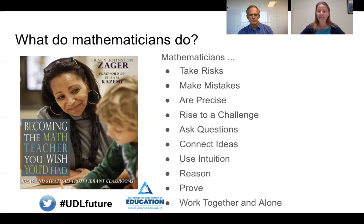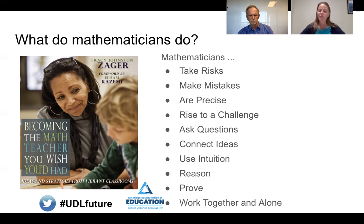Mathematicians take risks, make mistakes, are precise, rise to a challenge, ask questions, connect ideas, use intuition, reason, prove, and work together and alone. The narrow definition many of us have held about what math is by nature excludes students. When we look at what math really is — not just the math we've done in school for decades, but what mathematicians engage in — the definition is much broader and actually much more inclusive.